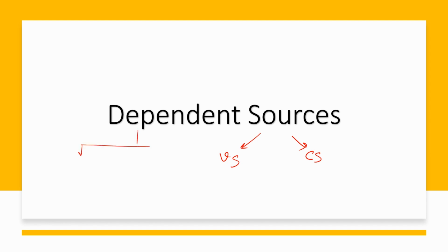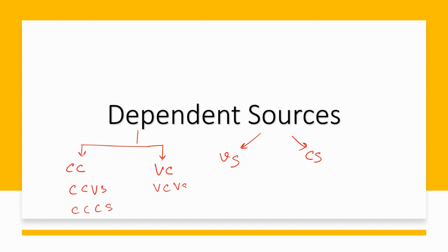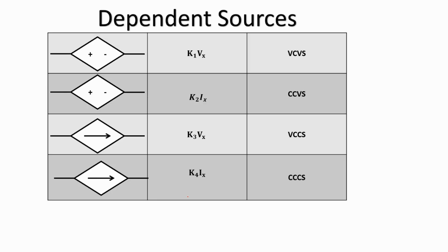We could either have a current controlled source or a voltage controlled source. Now, a source could be of two types — voltage or current — so that leads us to a combination of four types: a current controlled voltage source, a current controlled current source, a voltage controlled voltage source, and a voltage controlled current source.